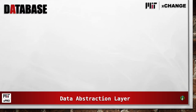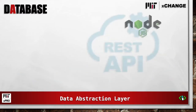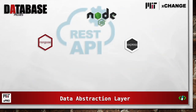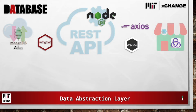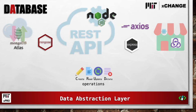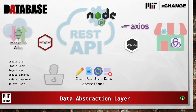For our data abstraction layer, we use a REST API to communicate with our MongoDB database. We then use Axios to serve the data to our React front-end components that use a Redux store for state management. Using our REST API, we can perform create, read, update, and delete operations. This applies to the user object as well as transactions.